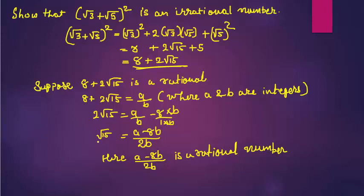Because RHS is rational, therefore LHS should also be rational. But actually, √15 is an irrational number. So this contradiction has arisen due to our incorrect assumption that (√3 + √5)² is a rational number.